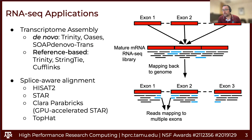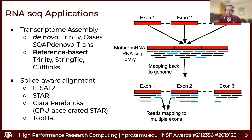A brief overview of applications for transcriptome assembly: De novo assembly, without any reference genome, uses programs like Trinity, which is probably the most popular, as well as Oasis and SOAPdenovo-Trans. For reference-based transcriptome assemblies that require a previously assembled genome, Trinity can also use a reference, but we can use programs like StringTie or CuffLinks as well.